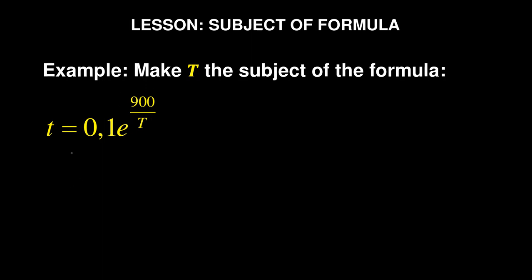This is an example taken from a previous question paper. There are actually many different ways of approaching this one, so I will show you two methods, but any other method is also correct. The first thing I want to do is to get rid of this 0.1, because 0.1 is separate. To get rid of it, I'm going to divide both sides — remember what you do on the left, you also do on the right.